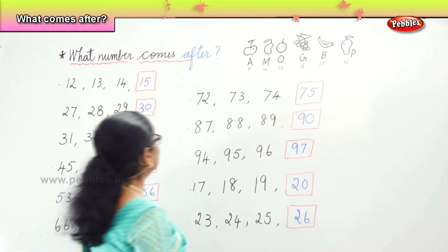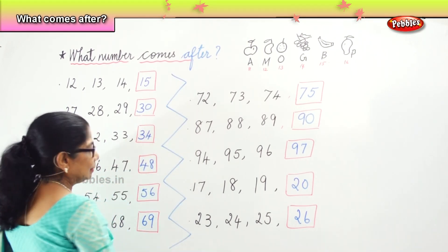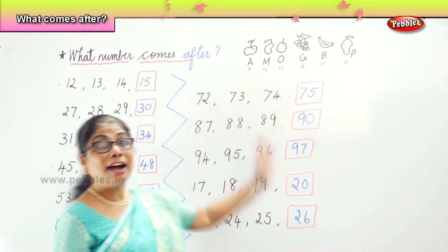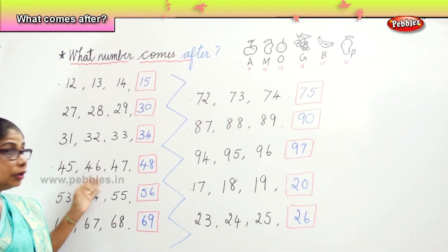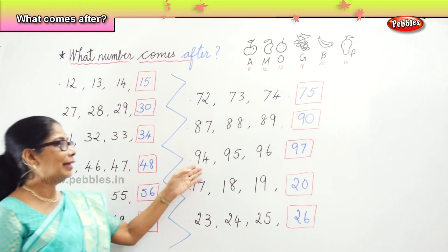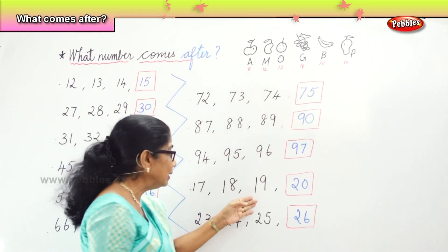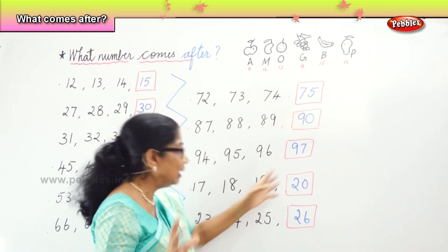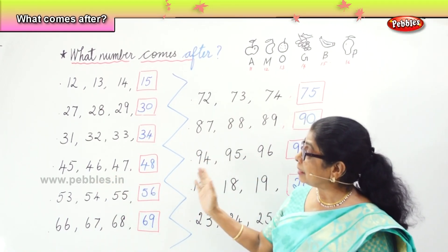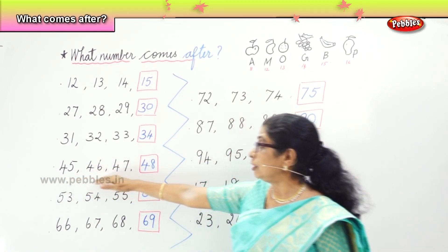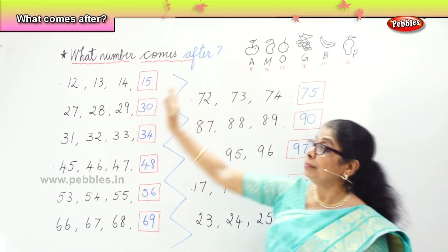See, now we learnt to find the numbers that come after. This is learning to count forward. 45, 46, 47, 48. 95, 96, 97, 98. 17, 18, 19, 20. Learning to count forward — we are also looking at the pattern. If it is 45, 46, 47, the number that follows is 48. So, what number comes after?